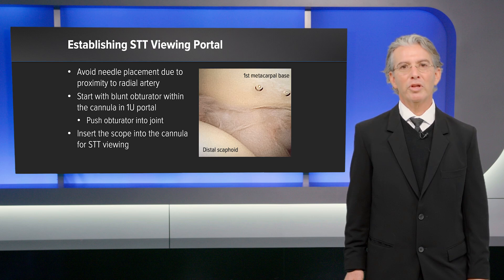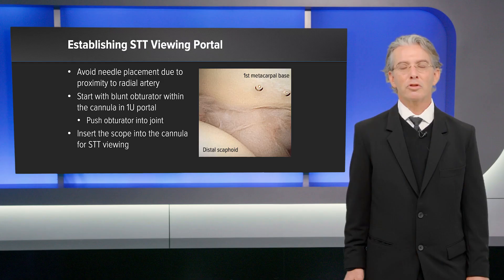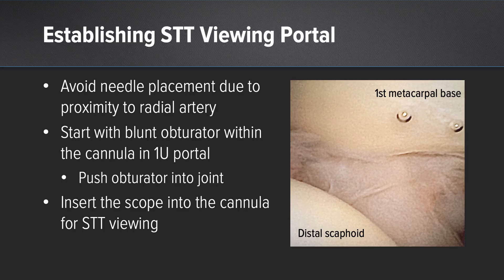Similarly, when establishing the STT joint portal, go through the 1U portal and then just pull back gently over the trapezium into the STT joint and use a blunt trochar to establish this portal. Do not use a needle to try to find the STT joint, as the radial artery is in that vicinity and can be damaged. If you have trouble finding the STT joint, you can use the blunt trochar under fluoroscopy to identify the STT joint.